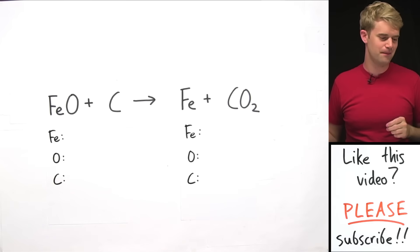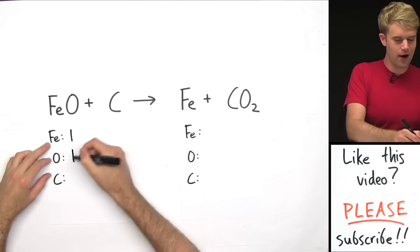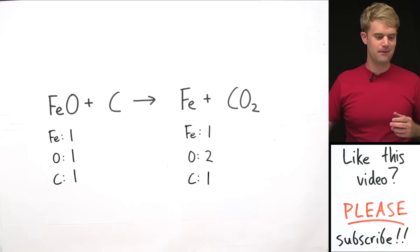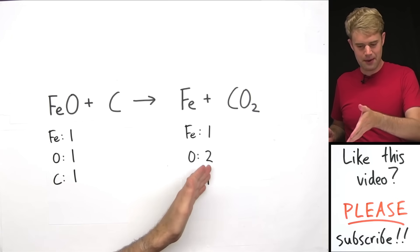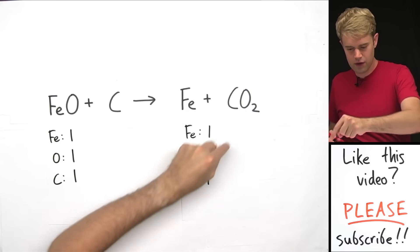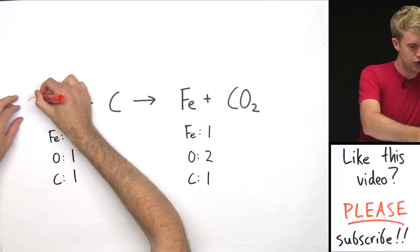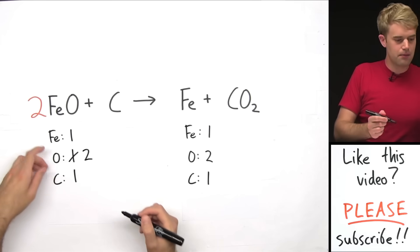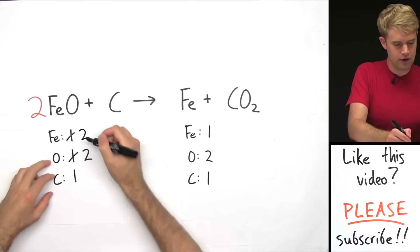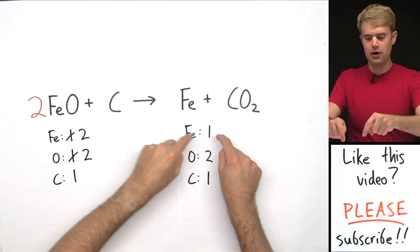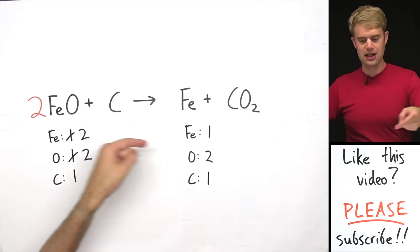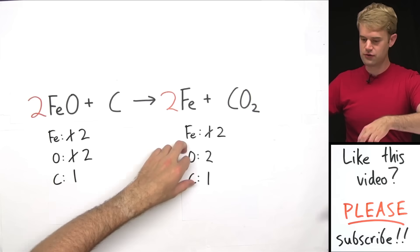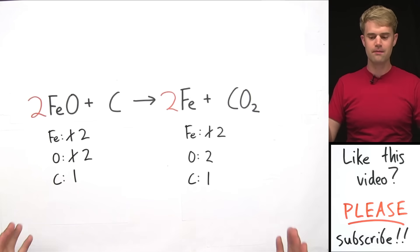Iron, oxygen, and carbon. Over here: one iron, one oxygen, one carbon. Here: one iron, two oxygens, one carbon. First I'll balance the oxygens — I have two on the right and one on the left, so I put a two in front of FeO. That gives two oxygens but also multiplies Fe by two, giving two Fe on the left. So I then put a two in front of Fe on the right, and now I have two, two, one — it balances.